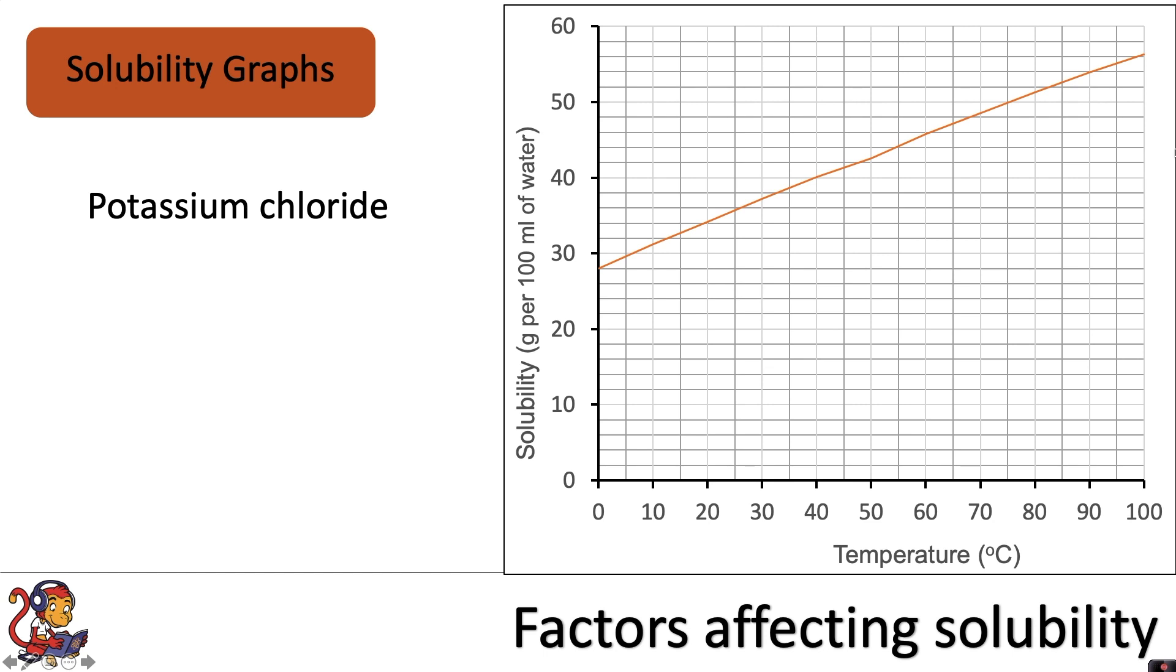You can show the solubility of different substances on a graph. For example, this graph shows the solubility of potassium chloride. You've got solubility on the y-axis and you've got temperature on the x-axis. So you see the solubility increases with temperature. Let's say we were dissolving this in 100 millilitres of water. As you heat up the water, you'll be able to dissolve more potassium chloride.